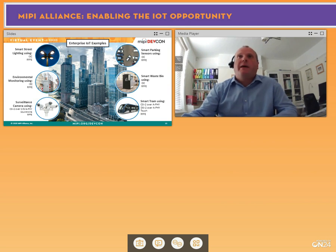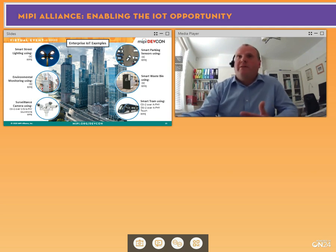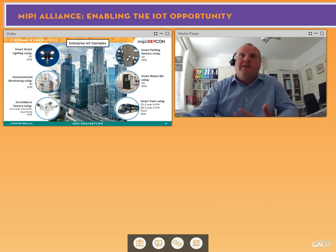Cameras may have built-in speakers to allow an operator to talk to people in the smart city, so using SoundWire to drive high-quality audio components — microphones and speakers — is key. SoundWire can also be used for noise cancellation and beam steering. For a smart tram, you may use displays and cameras via CSI and DSI interfaces, but also AFI — these are large IoT devices with long cable runs and harsh EMI environments.